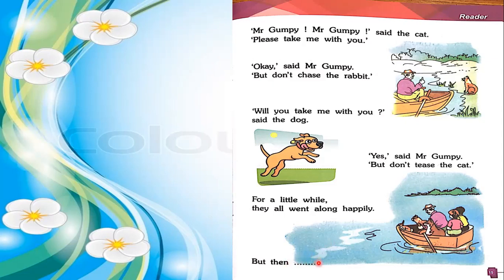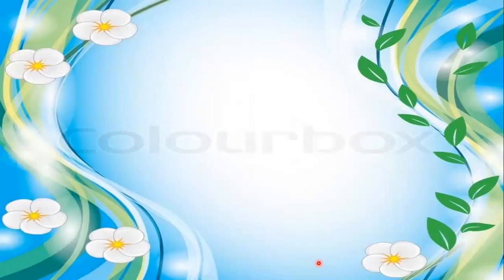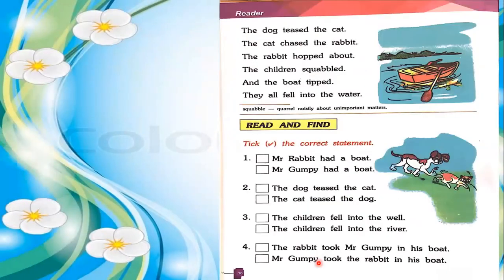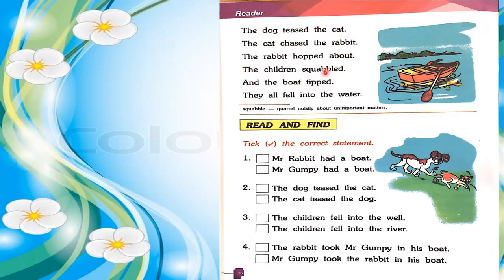But then, what happened? Open page number 16. The dog teased the cat — means the dog made fun of the cat. The cat chased the rabbit — the cat tried to catch the rabbit. The rabbit hopped about — means the rabbit jumped. The children squabbled — means the children were making a noise.